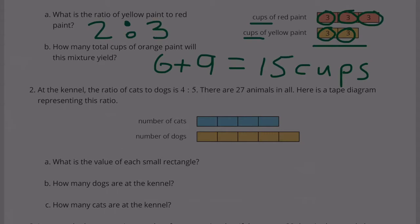Number 2. At the kennel, the ratio of cats to dogs is 4 to 5. There are 27 animals in all. Here is a tape diagram representing this ratio.